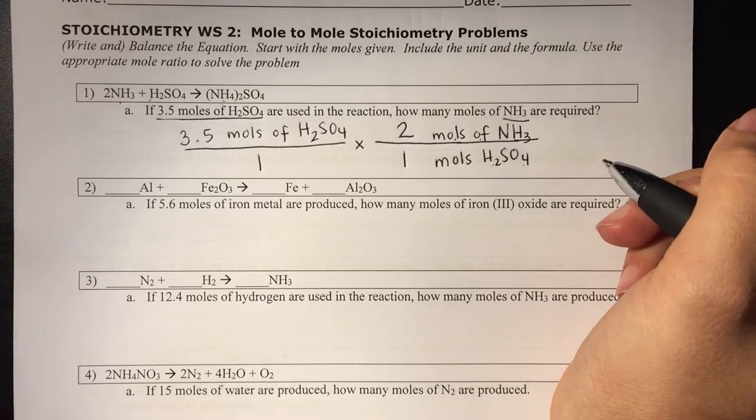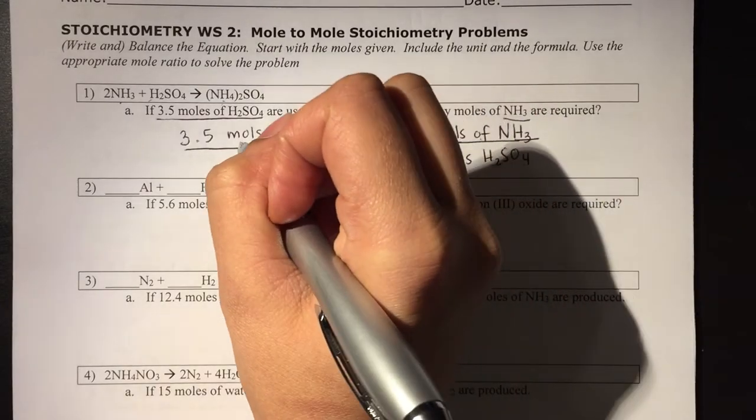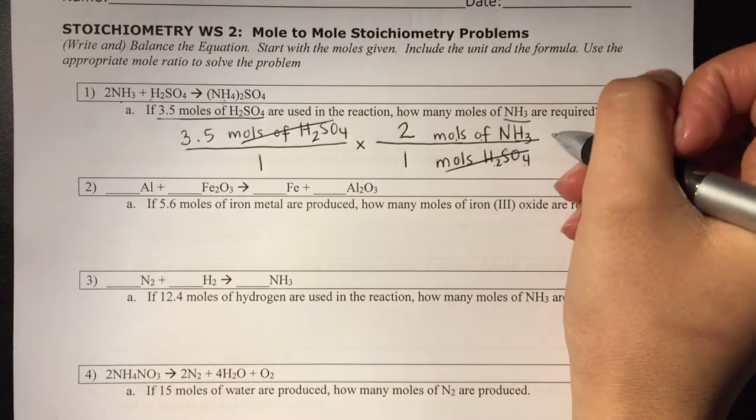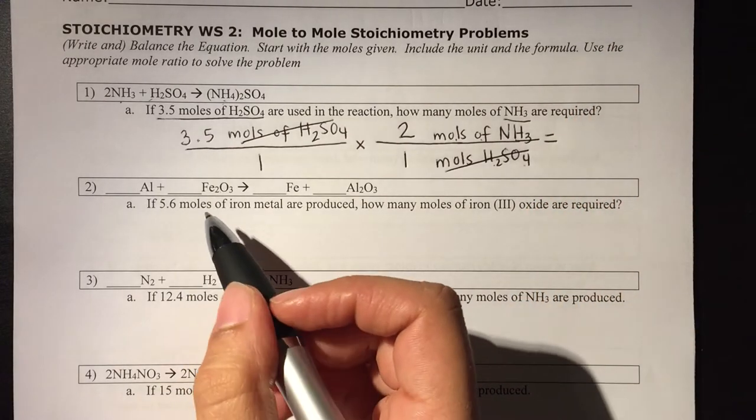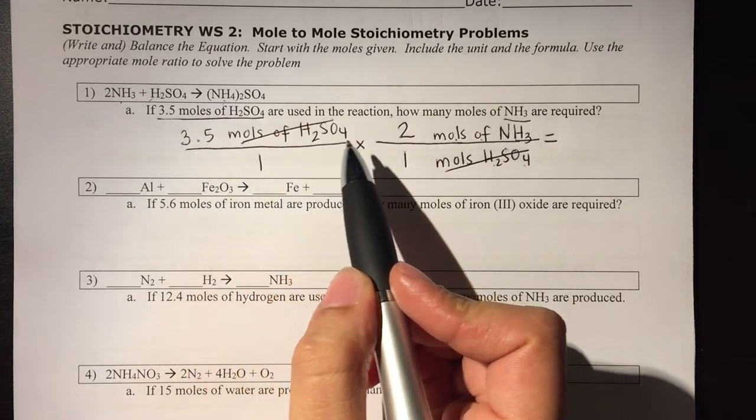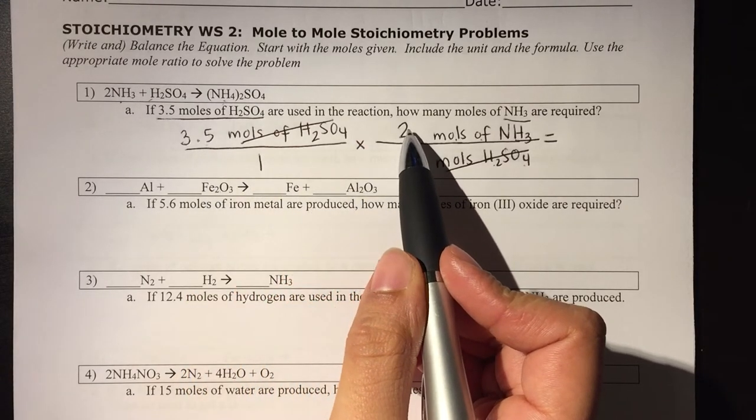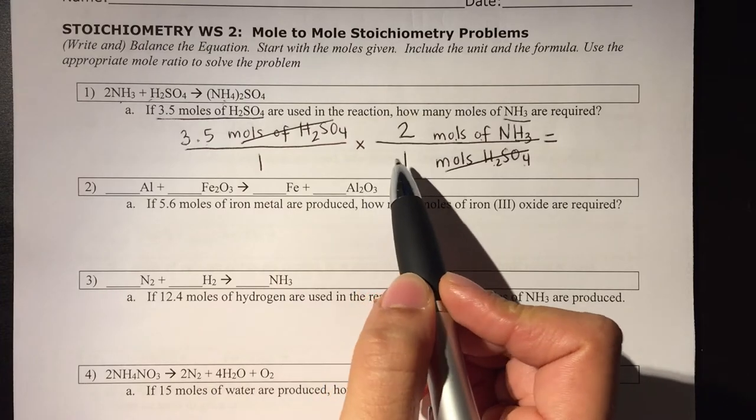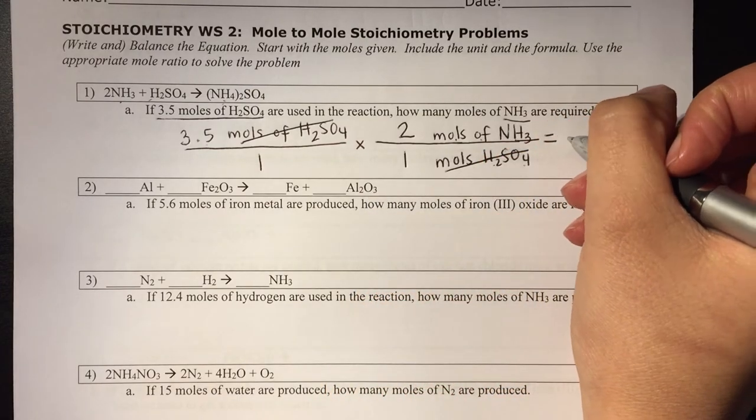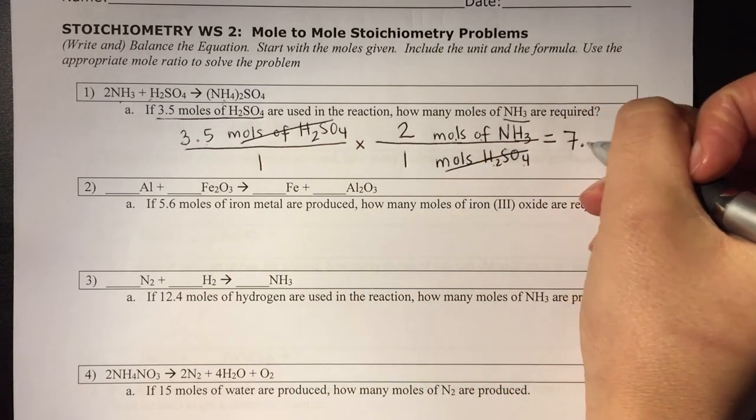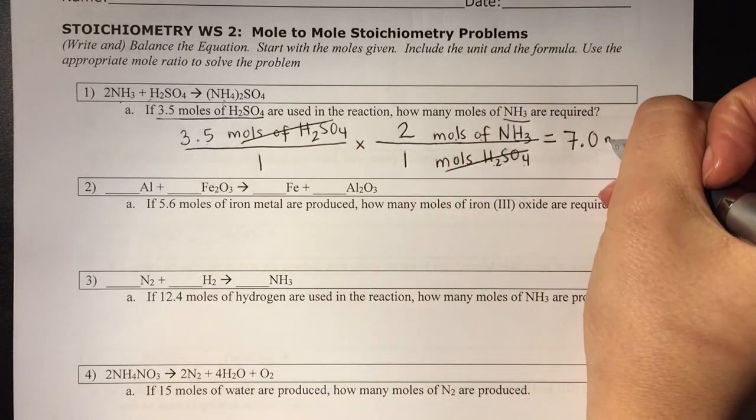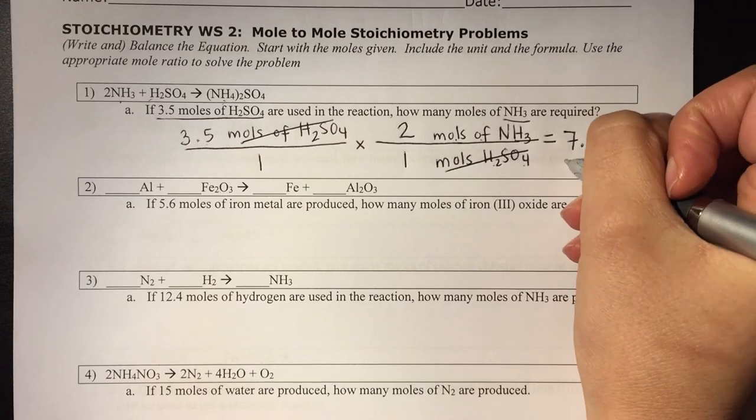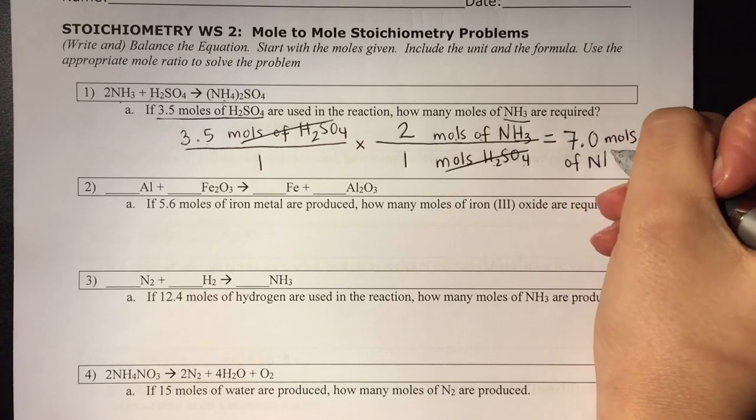Now I've set up my problem, and I know that I can cancel out like units. And that leaves me with 3.5 times 2 divided by 1 times 1, which is going to leave me with 7. And the unit here is moles of NH3.